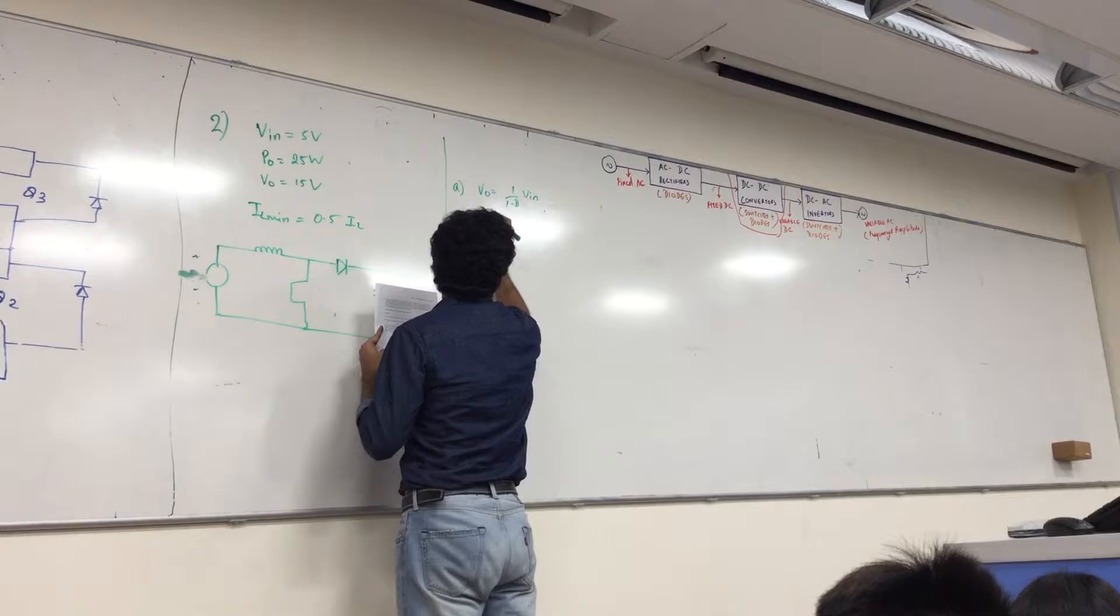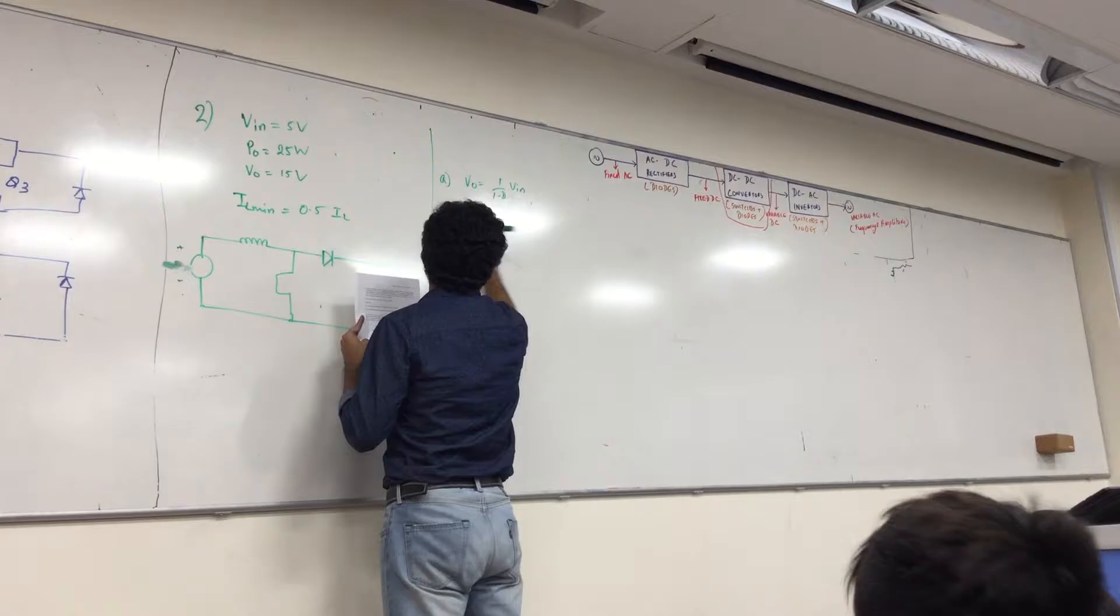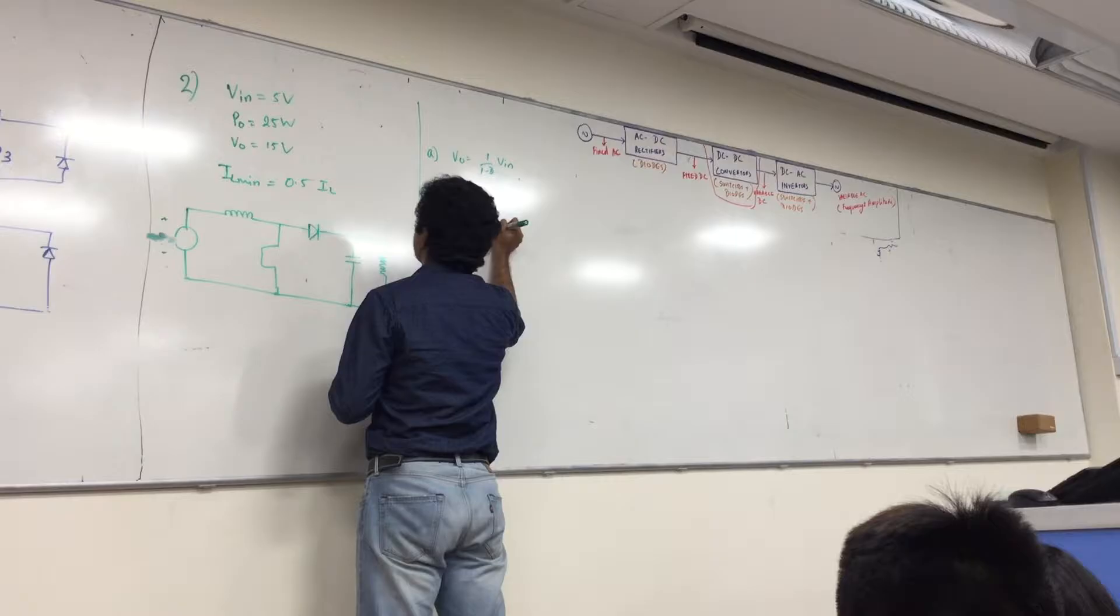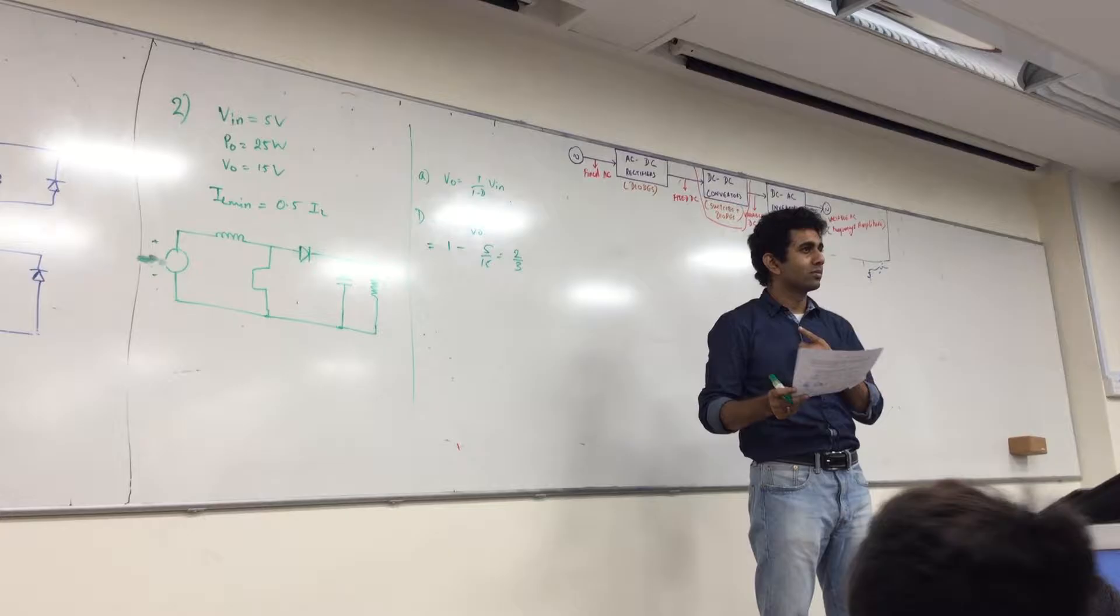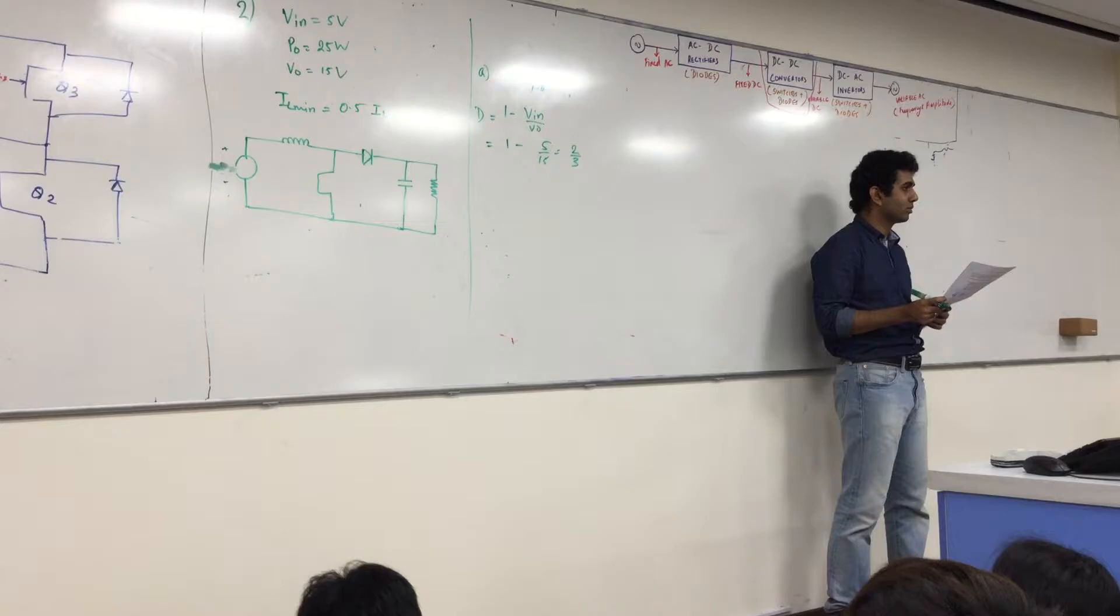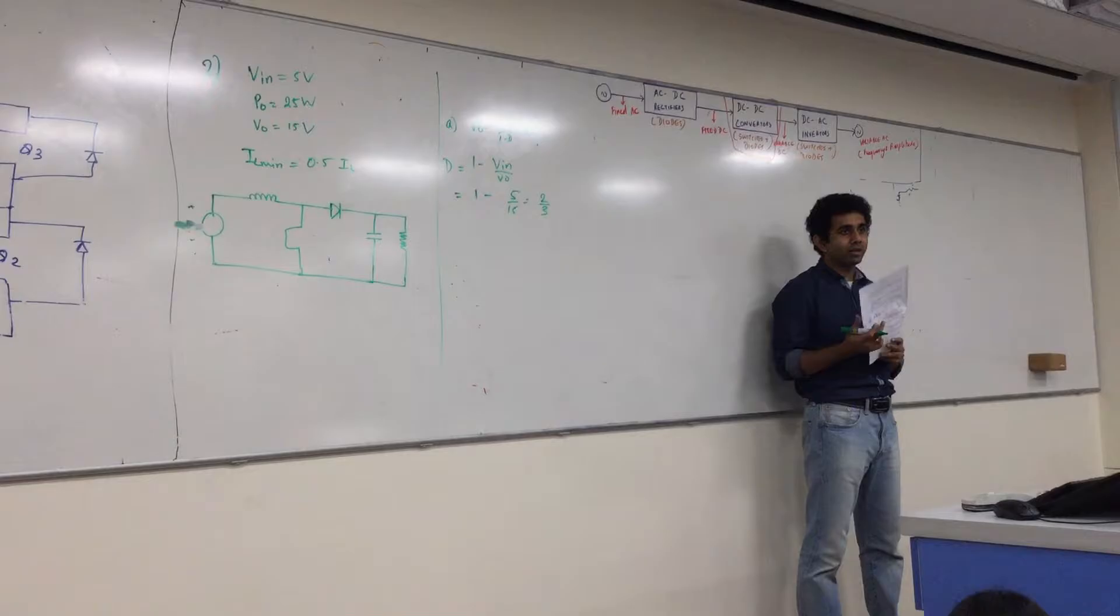See, for finding out one equation is 5 marks. So you have VO is 1 by 1 minus D times Vin. So 1 minus Vin by VO is D. Right? So I have 1 minus 5 by 15, or 15 minus 5 times 2 by 3. Duty ratio is 2 by 3. Exactly the same thing as you had in the tutorial also, I guess.